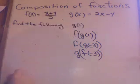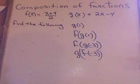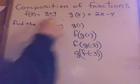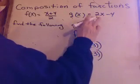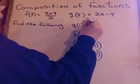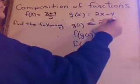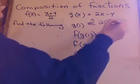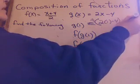A couple more examples. Two more functions. Find the following: g of 1. Well, which equation do you think I go do? Write the g equation. So, g of 1, in this case, is going to equal, putting a 1 in for x, 2 times 1 minus 4, which is 2 minus 4, negative 2.